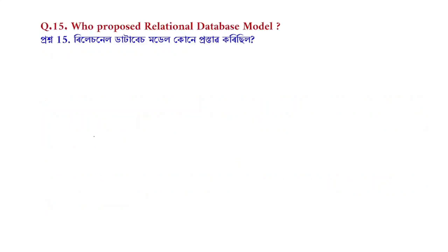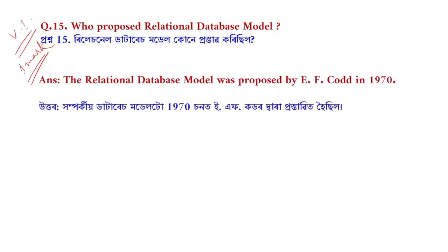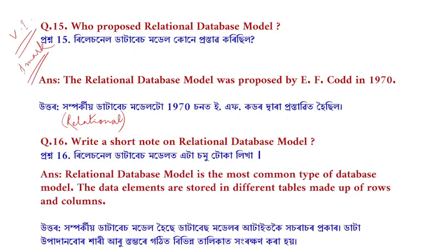Question number 15: Who proposed the relational database model? This is an important question for HSLC 2023. The relational database model was proposed by E.F. Codd in 1970. The relational database model is the most common type of database model. The data elements are stored in different tables made up of rows and columns.